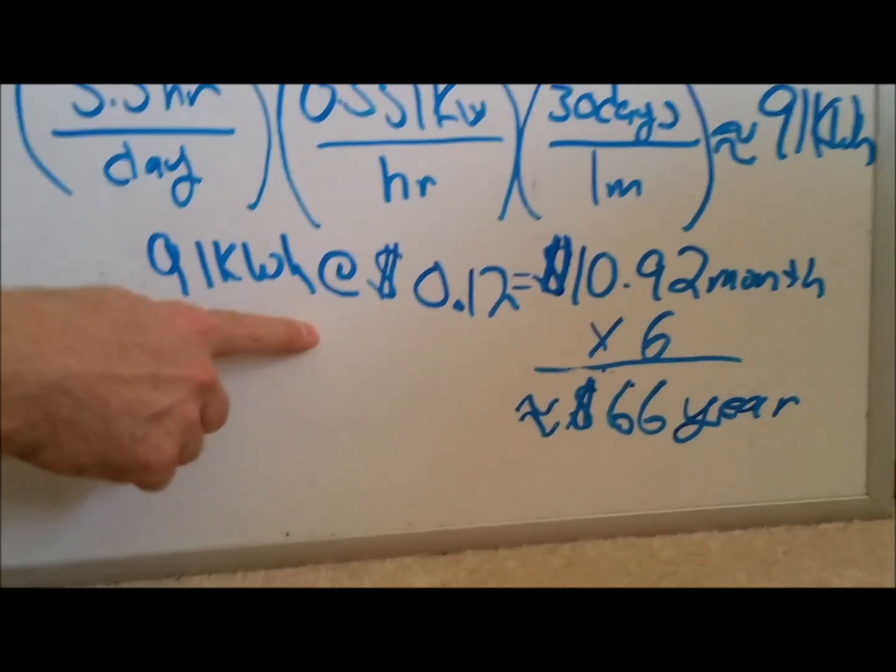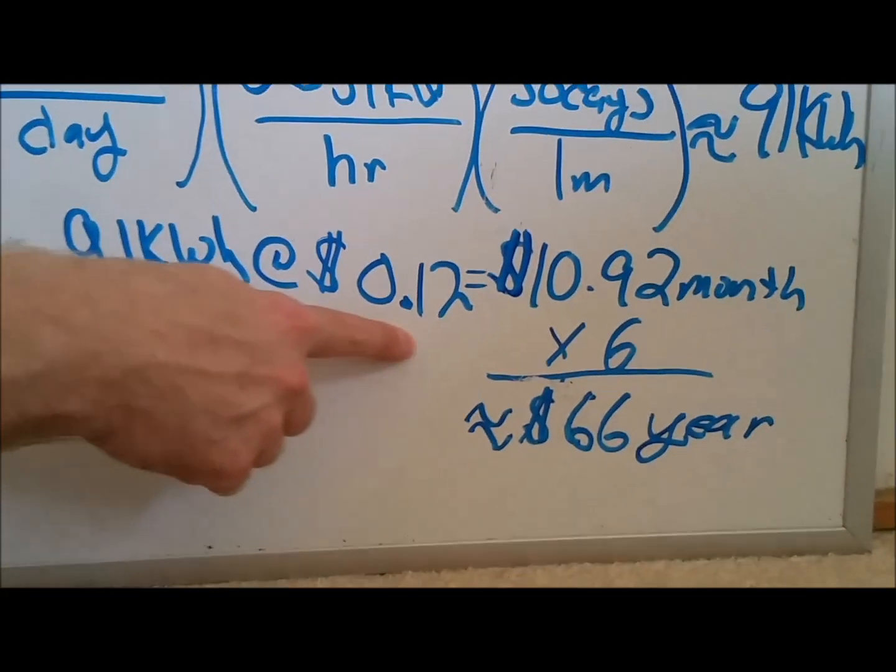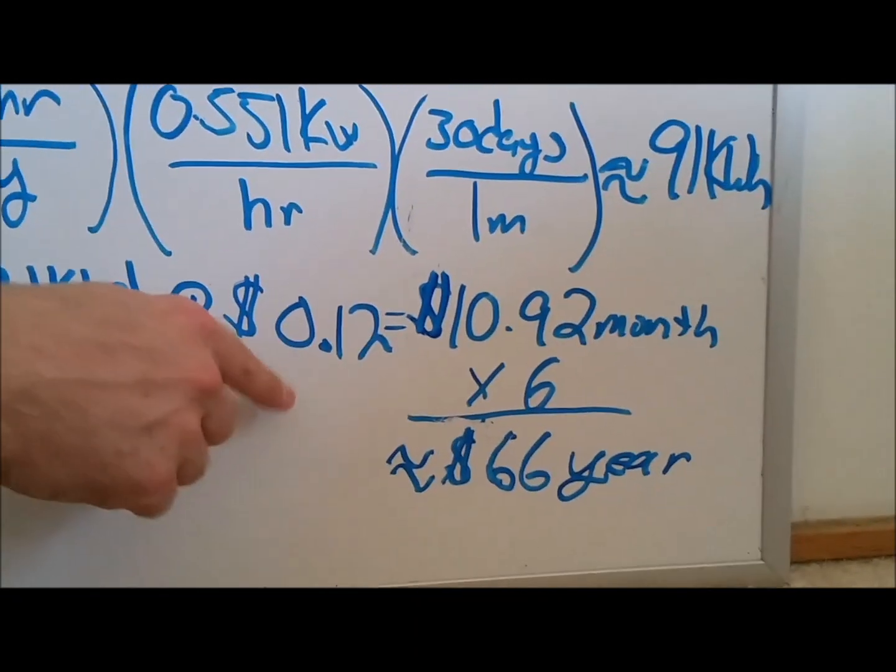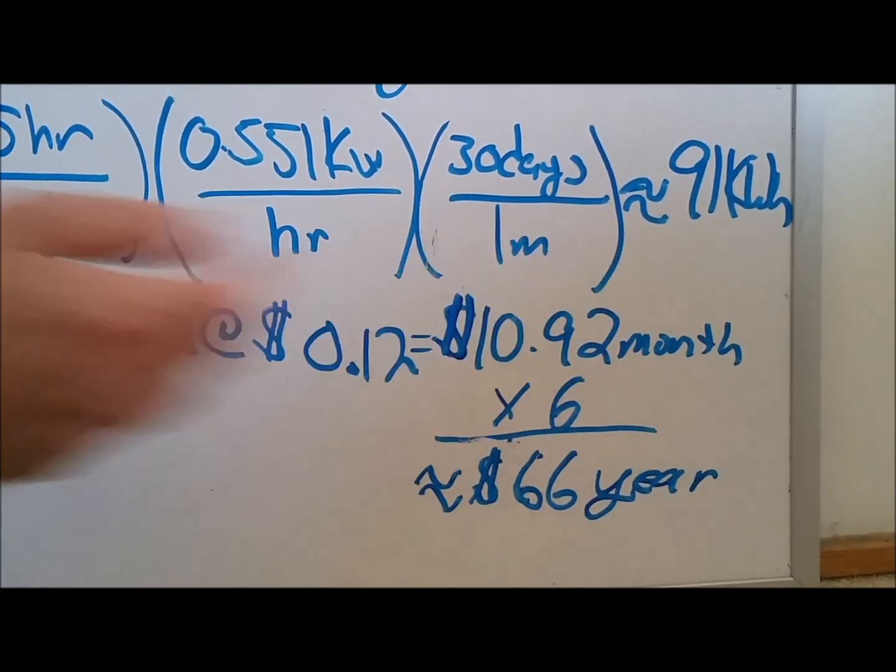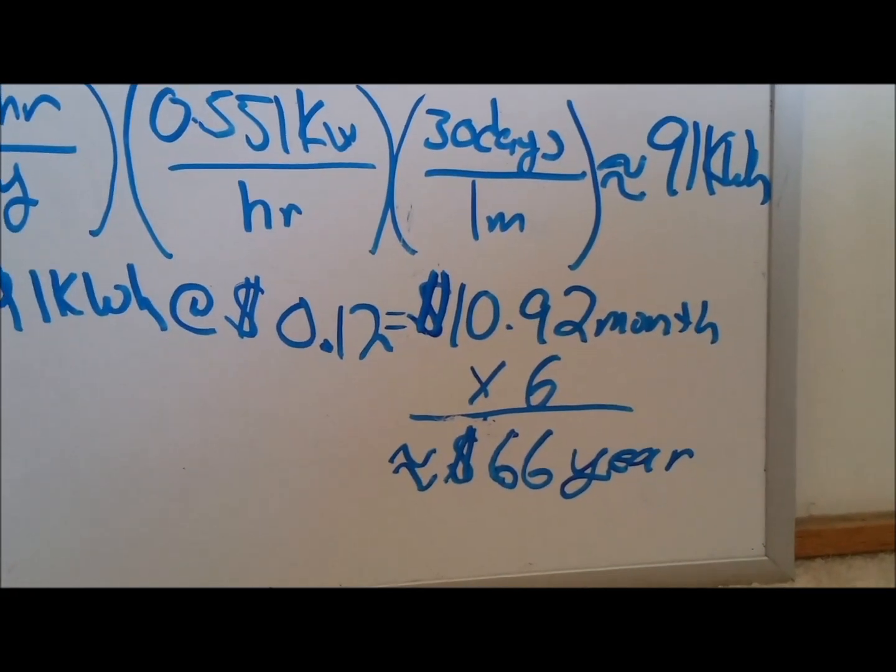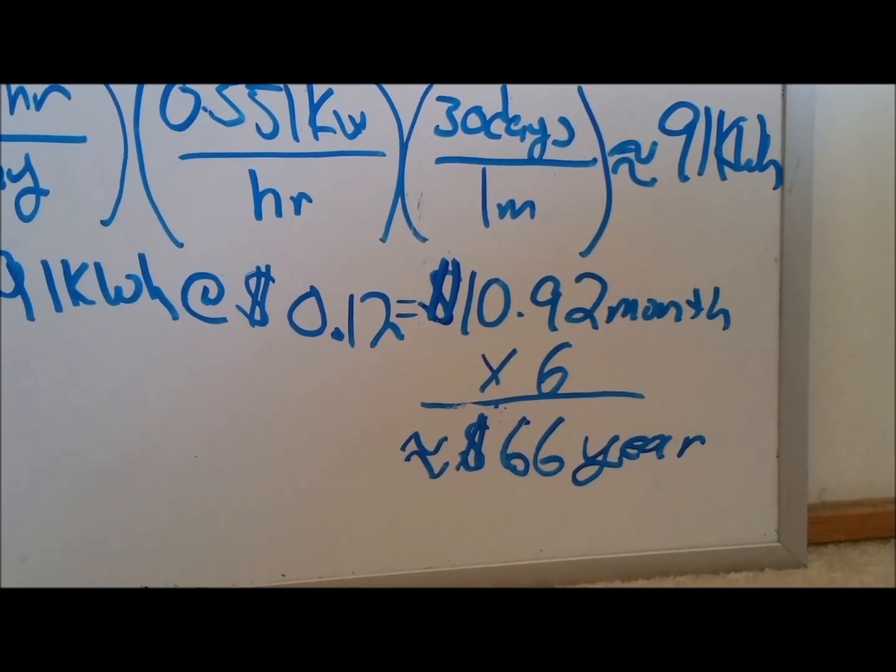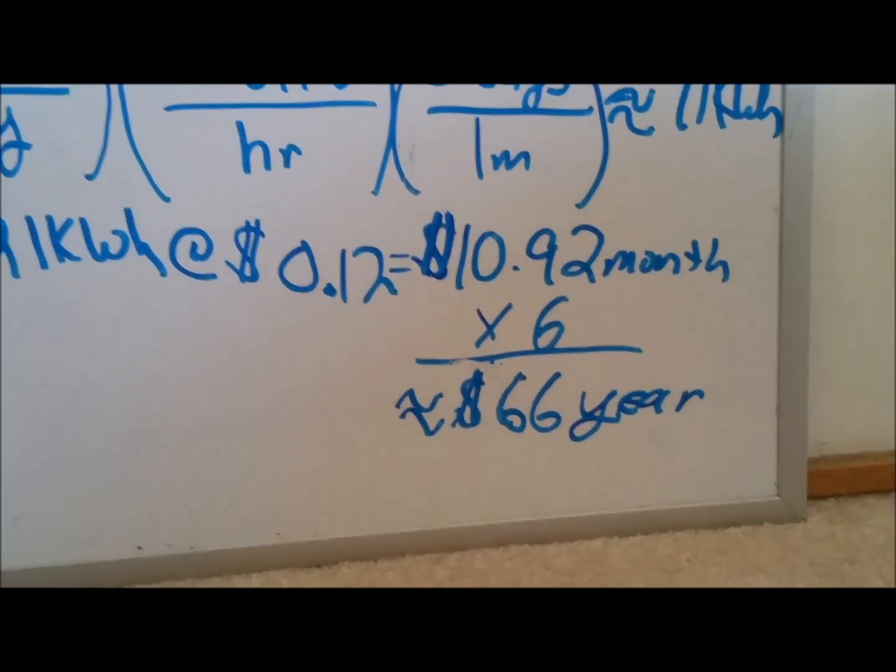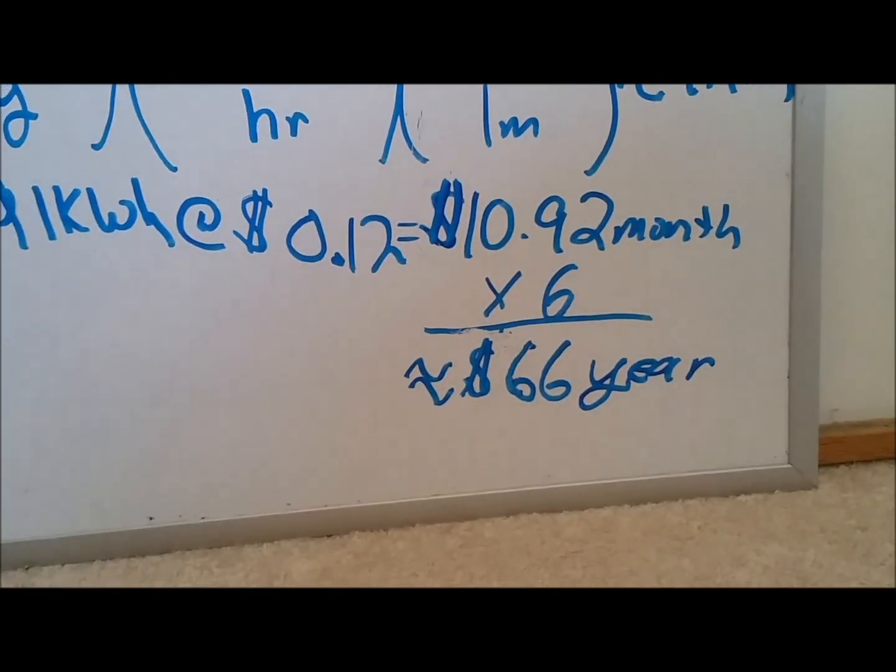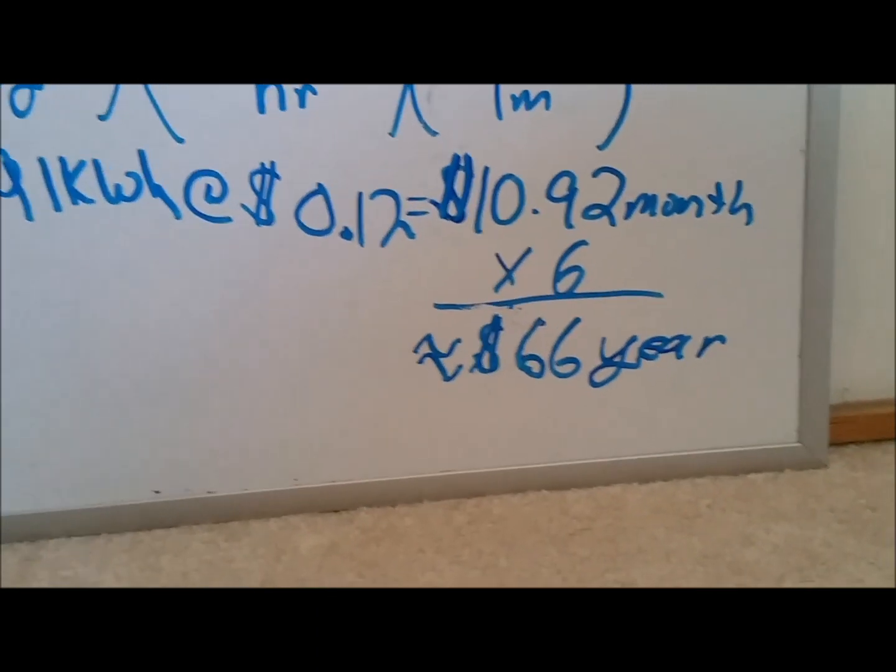91 kilowatt hours, and we're billed 12 cents a kilowatt hour roughly. Over a month's time, we'll save $10 and roughly $11 on the utility bill. And I run my air conditioner roughly six months out of the year. So that's a $66 a year savings. Now it's not a whole whopping lot of money.